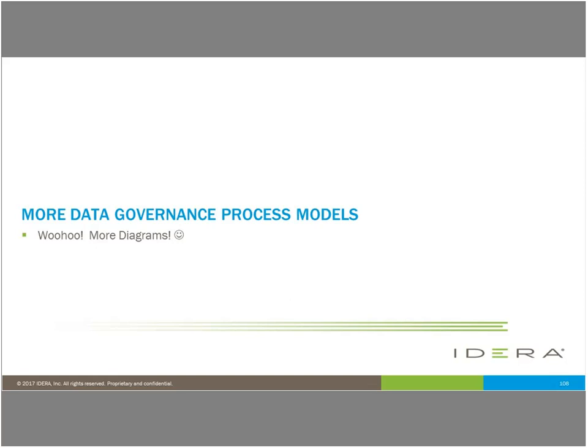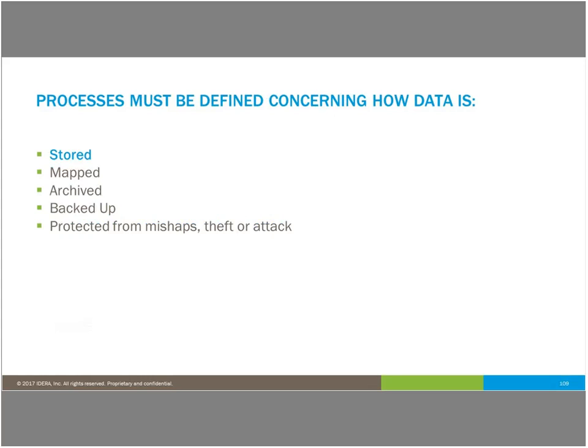I'm going to show a few more data governance process models to give you some more examples of different ways you can define your data. We're going to go through how data is stored, how it's mapped, how it's archived, how it's backed up, and how it might be protected from mishaps, theft, or attack.